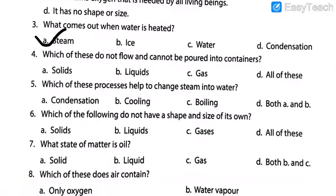Moving on to number four: which of these does not flow and cannot be poured into containers? Options are solids, liquids, gas, or all of these. Liquids can flow — yes. Gas can flow — yes. All of these can flow? No, because solids cannot flow. So which does not flow and cannot be poured in containers? Option A is the correct answer — that is solid.